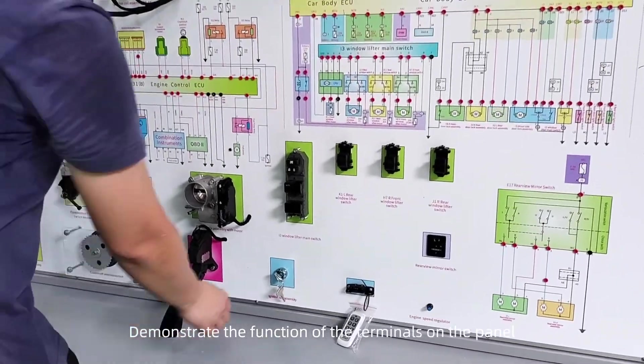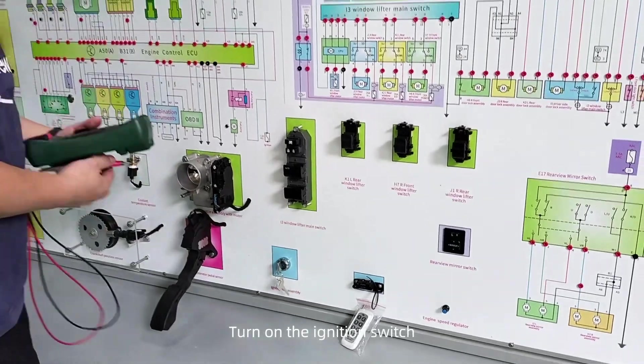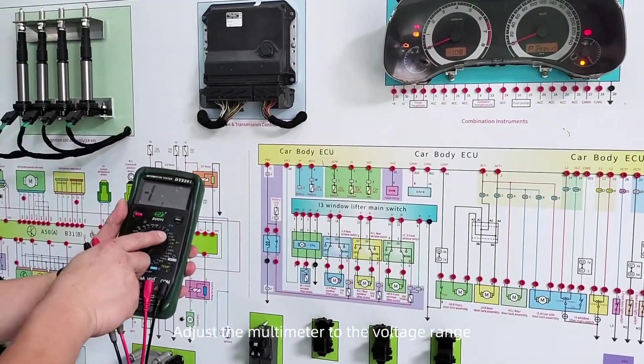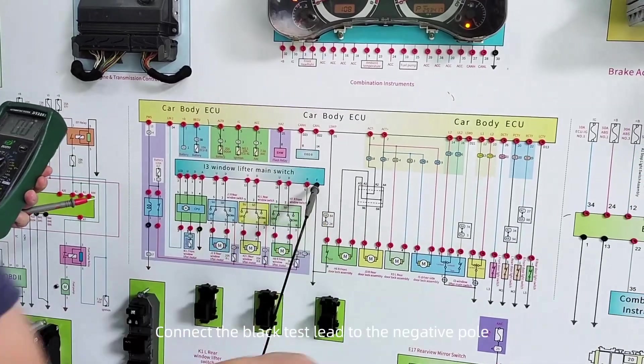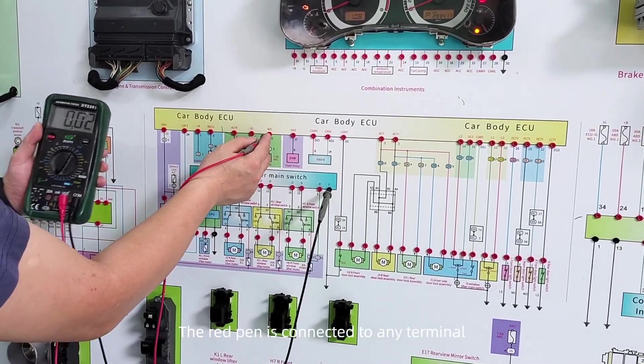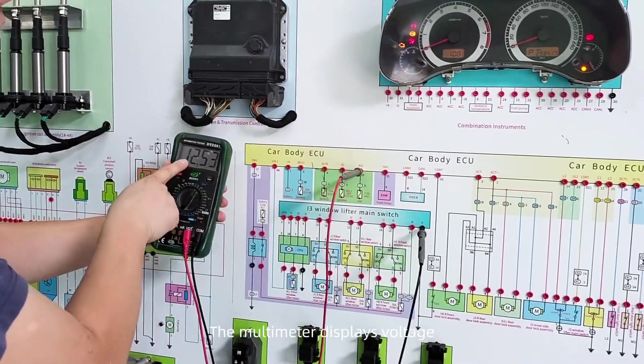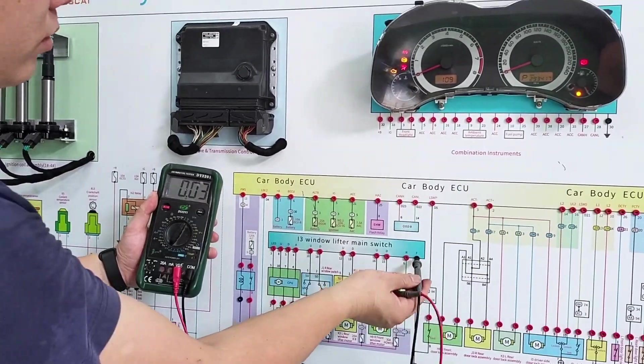Demonstrate the function of the terminals on the panel. Turn on the ignition switch. Adjust the multimeter to the voltage range. Connect the black test lead to the negative pole. The red pin is connected to any terminal. The multimeter displays voltage. Disconnect.